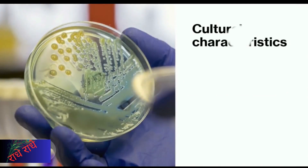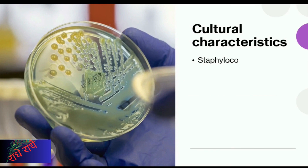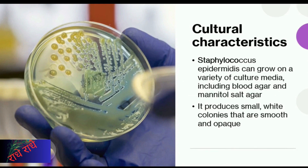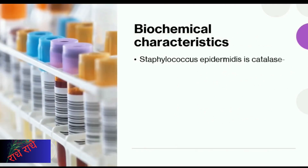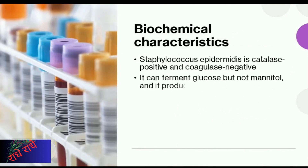Staphylococcus epidermidis is a gram-positive, coagulase-negative bacterium that can grow on various culture media such as blood agar and mannitol salt agar. Colonies of this bacterium are usually small, white, smooth, and opaque.